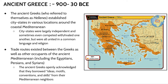It is well known that there were many trade routes that existed between the Greeks, as well as other occupants of the ancient Mediterranean. So they definitely had contact with the ancient Egyptians, with the ancient Persians, as well as the Syrians. The ancient Greeks actually openly acknowledged that they borrowed motifs, ideas, skills, and conventions from their Mediterranean neighbors.